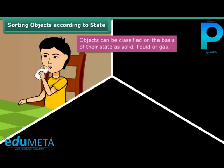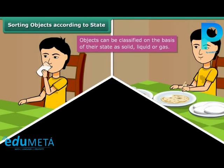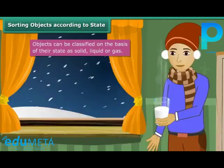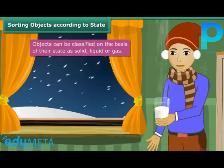The water you drink to quench your thirst is liquid, whereas the food you eat is solid. The chilled juice you relish in summers is liquid, whereas the glass container you have it from is solid. The steaming hot milk you enjoy in winters is liquid, whereas the steam coming out of the milk is a gas.